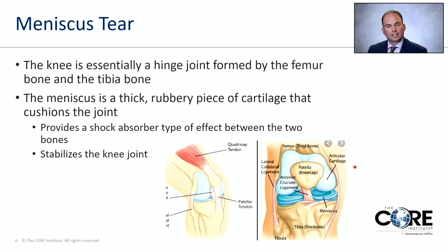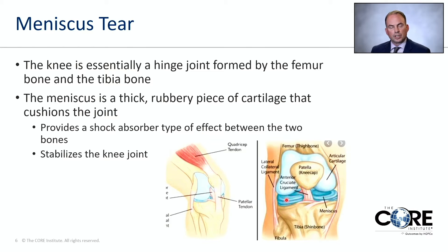The knee is essentially a hinge joint formed by the femur bone and the tibia bone. The meniscus is a thick rubbery piece of cartilage that cushions the joint — shown in blue in the diagram. The meniscus provides a shock absorber effect between the two bones and also serves to add stability to the joint. When we run, jump, land, twist, or cut, this meniscus cushions the shock between the femur and tibia.